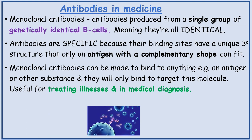Monoclonal antibodies are antibodies produced from a single group of genetically identical plasma B cells, so they are identical. Antibodies are specific because their binding sites have a unique tertiary structure that only an antigen with a complementary shape can fit. Monoclonal antibodies can be made to bind to anything, e.g. an antigen or other substance, and they will only bind to that target molecule.